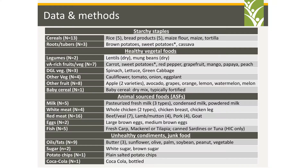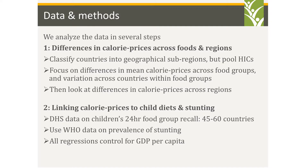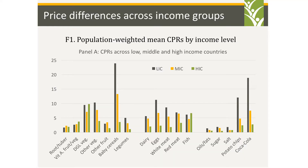The food groups include two starchy staple groups, six groups of healthy vegetable foods, five groups of animal-source foods, and some unhealthy condiments and junk food. We analyze this data in several steps. These results show population-weighted measures of prices relative to the cheapest cereals in low-income, middle-income, and high-income countries, showing a lot of variation across levels of development.